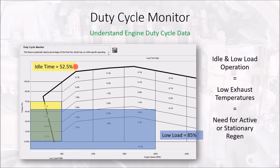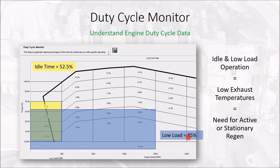The vertical axis represents percent of torque — we'll call it percent load. If we take the 50 percent line and look at everything underneath it, approximately 85 percent of the life of this vehicle is being spent below 50 percent load. So this indicates low load operation.